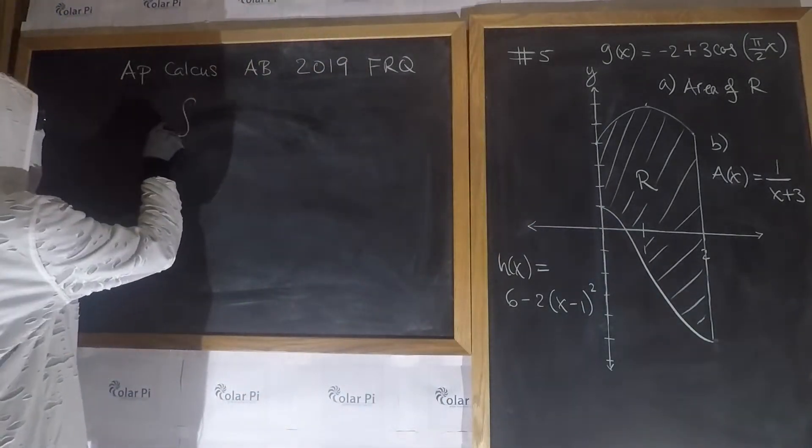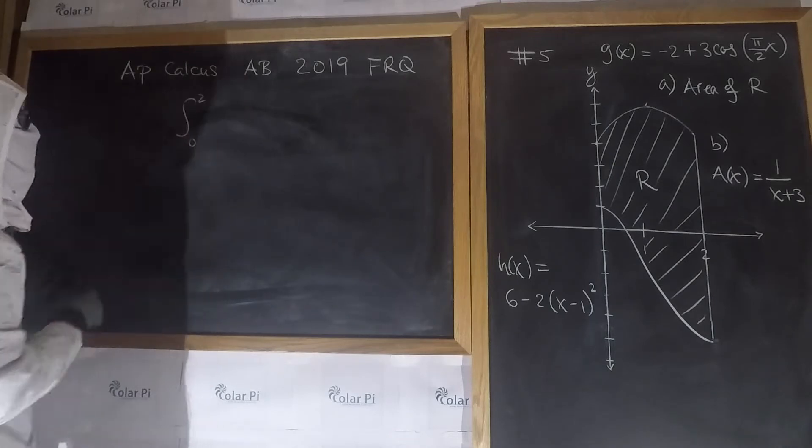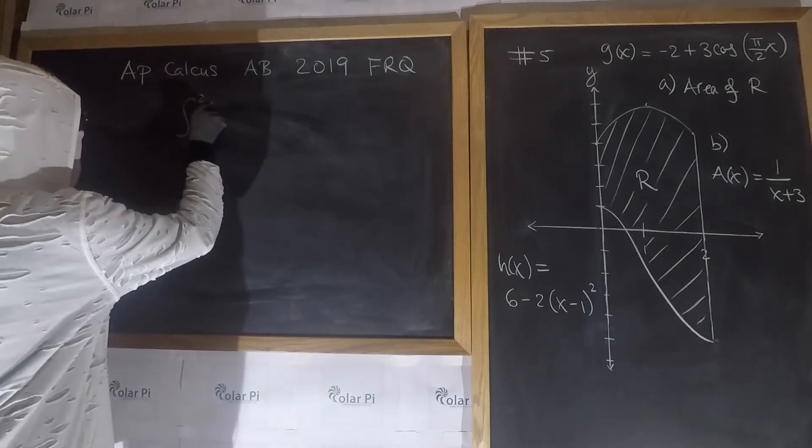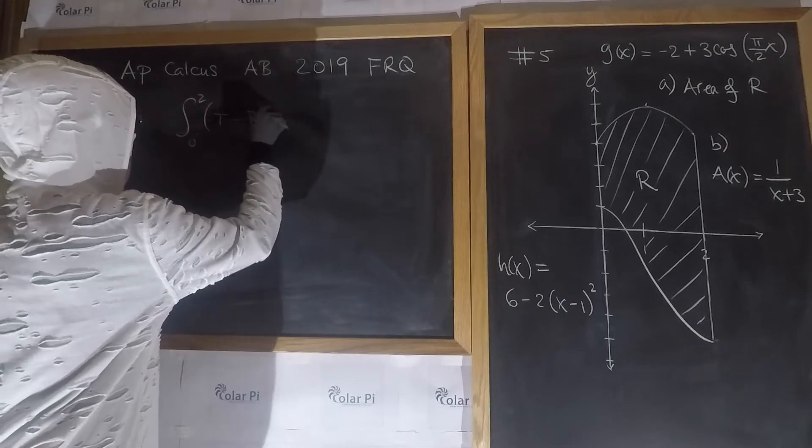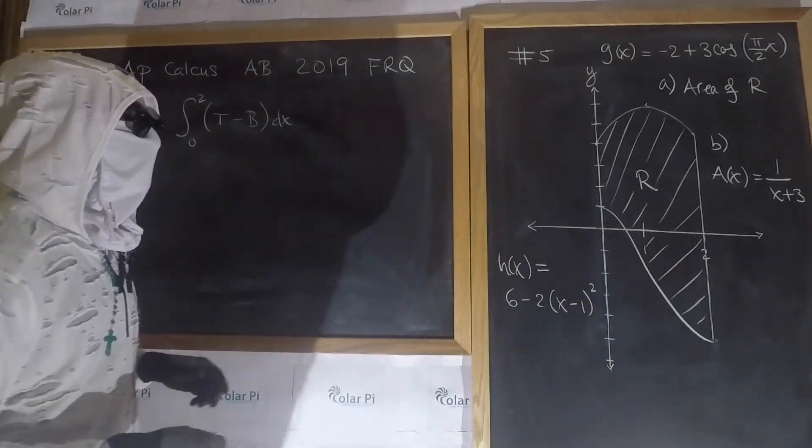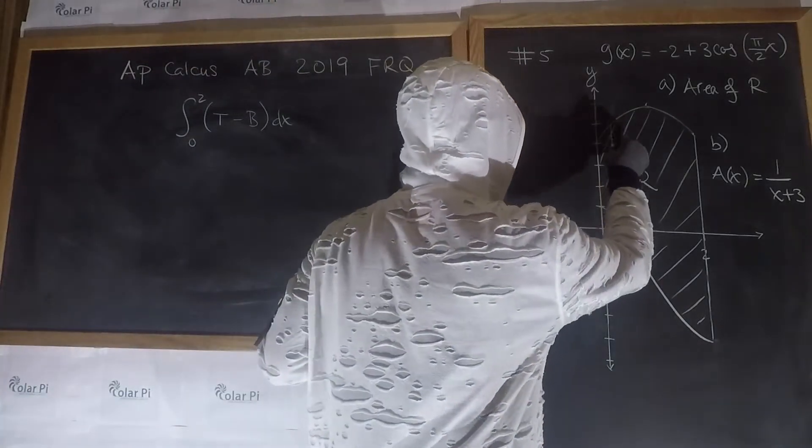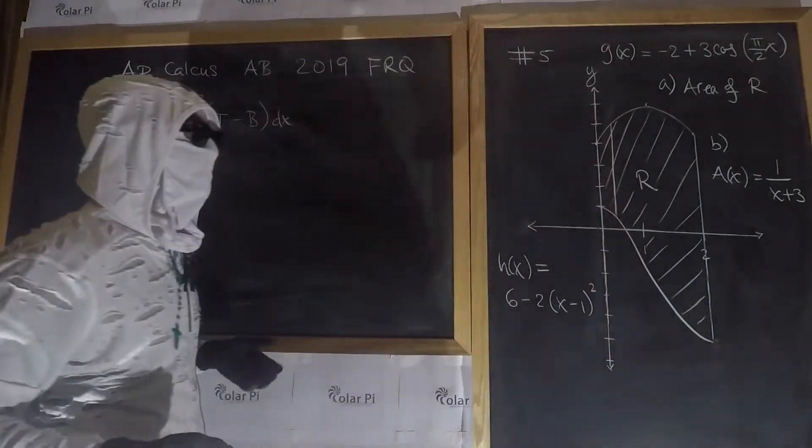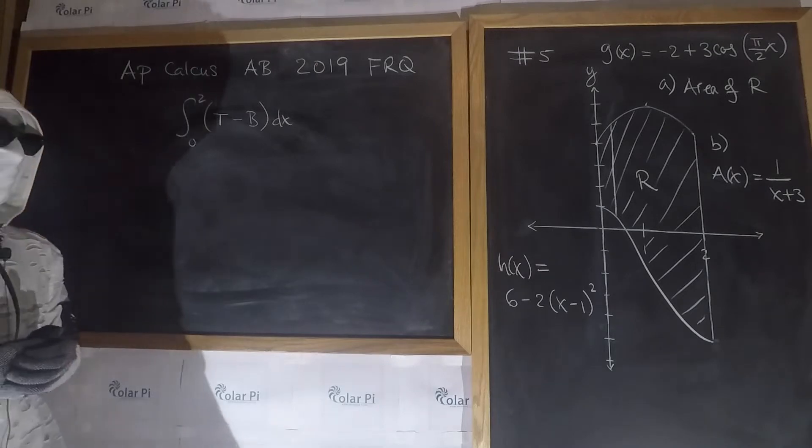Since x goes from 0 to 2, we go from 0 to 2, and then the top function minus the bottom function, and then dx. We're adding up along x, adding up these heights along x. That's why it's top function minus bottom function.